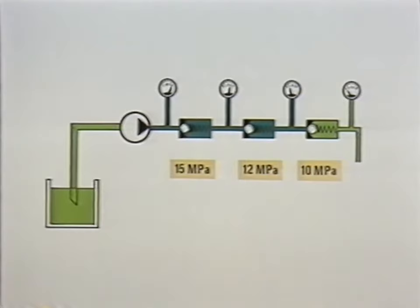The pressure-limiting valve nearest the pump is set at a pressure of 15 MPa, followed by the next valve set at 12 MPa, and the last in the line set at 10 MPa.